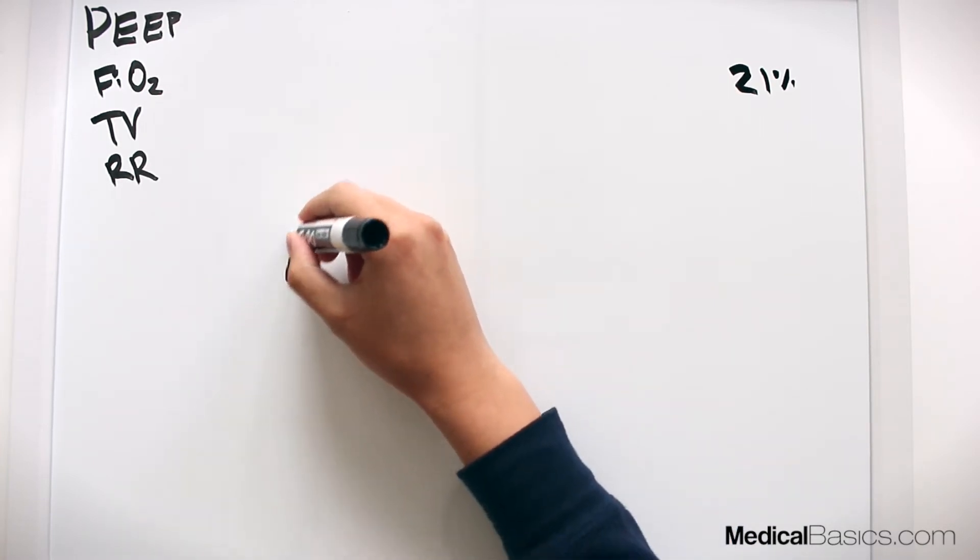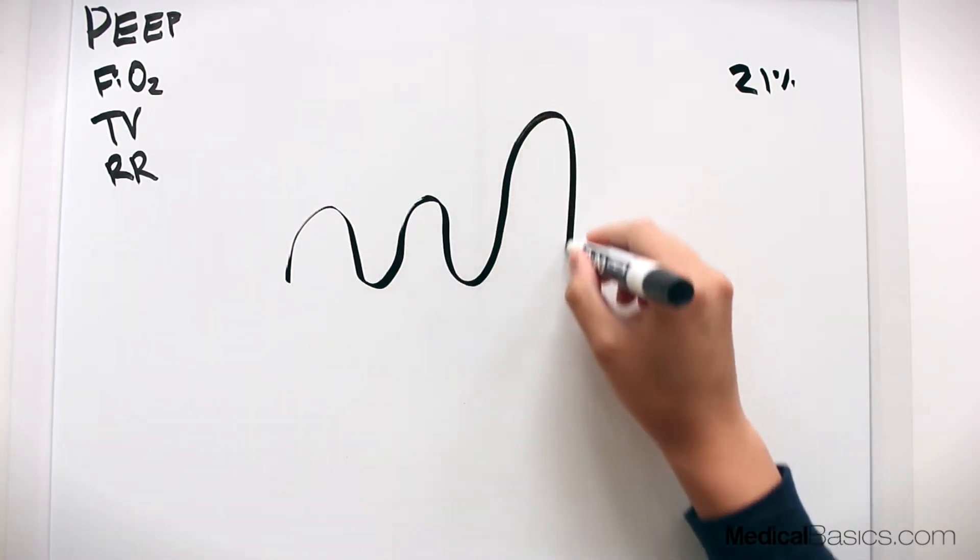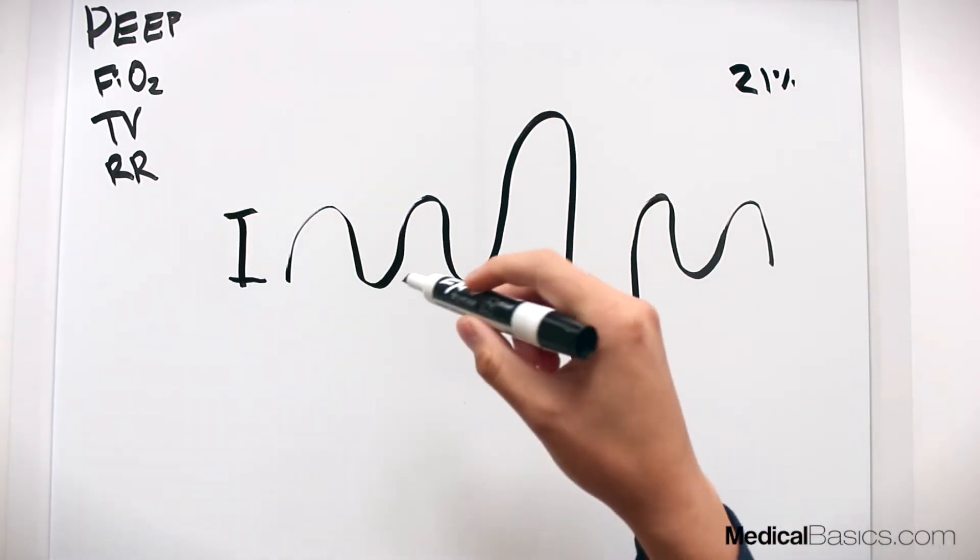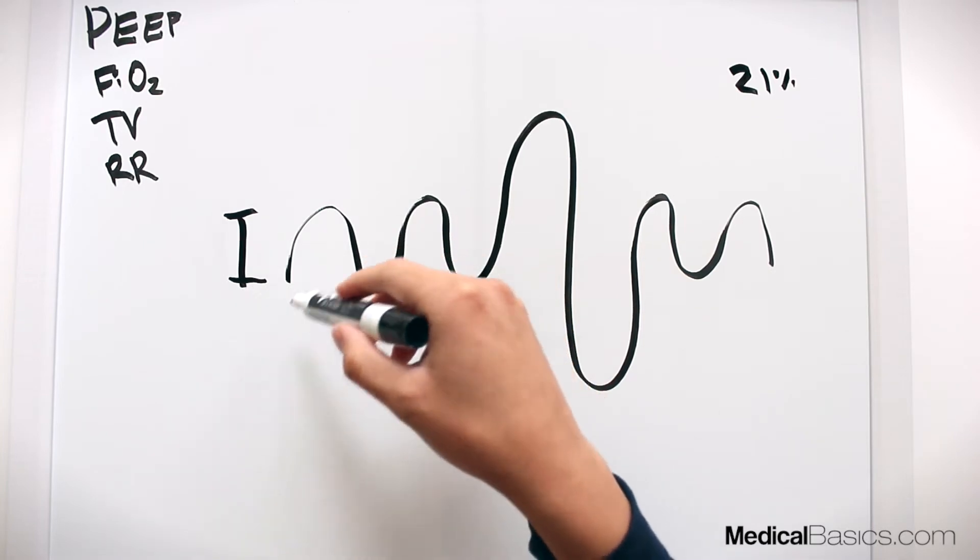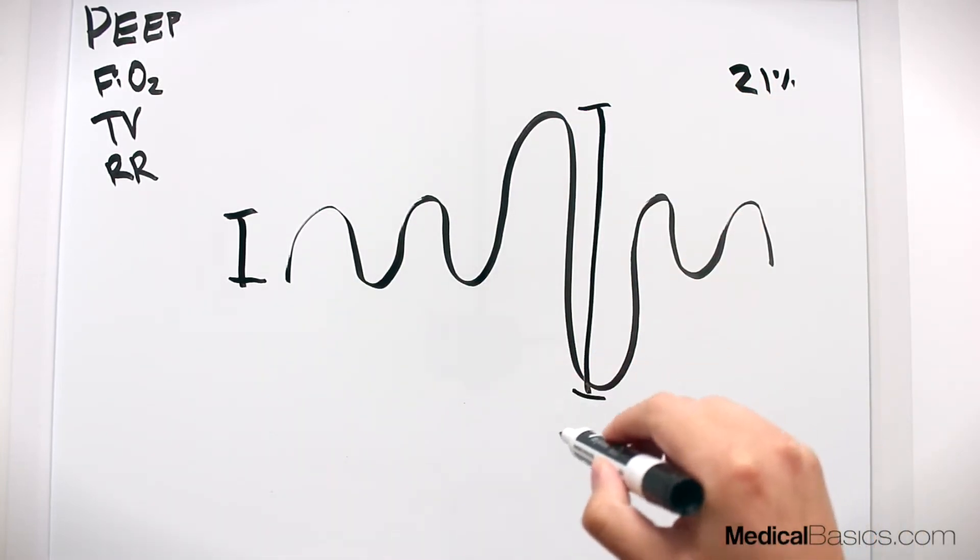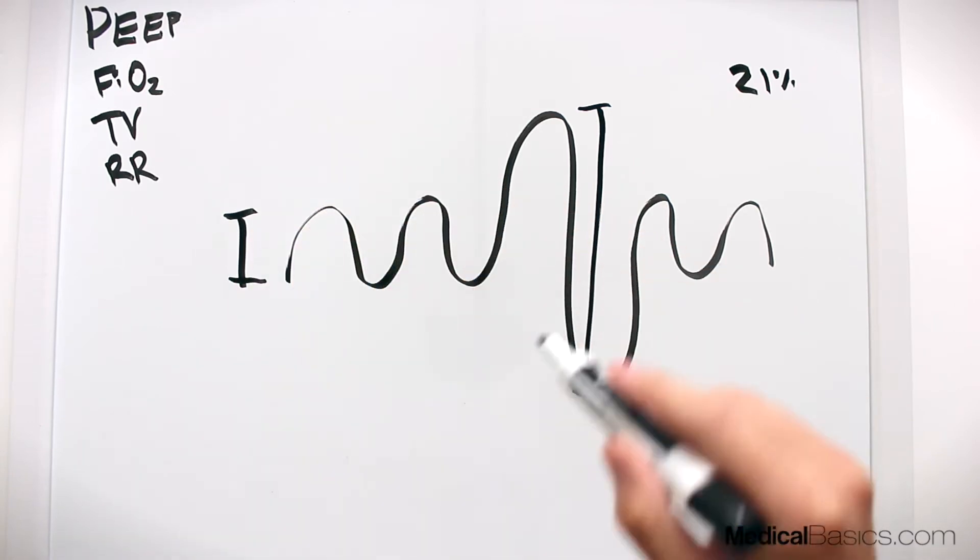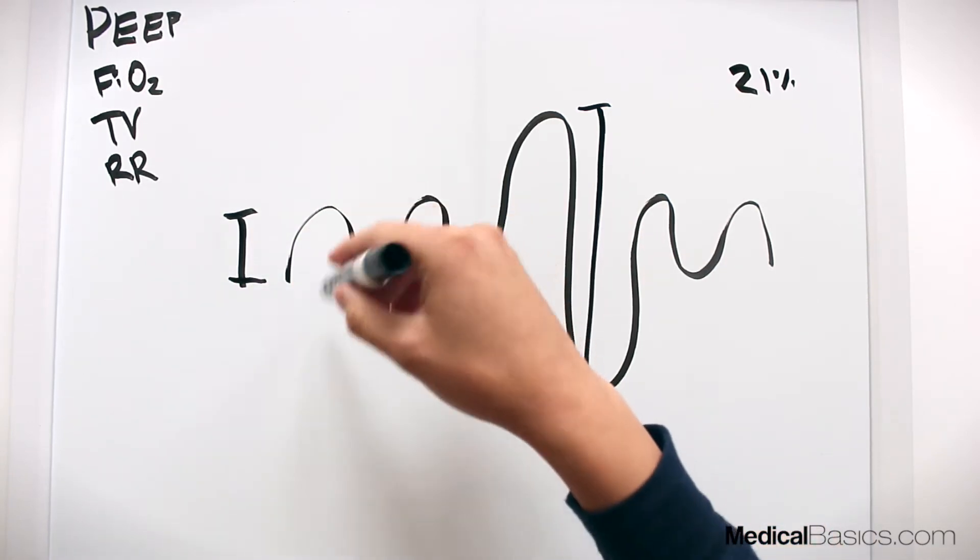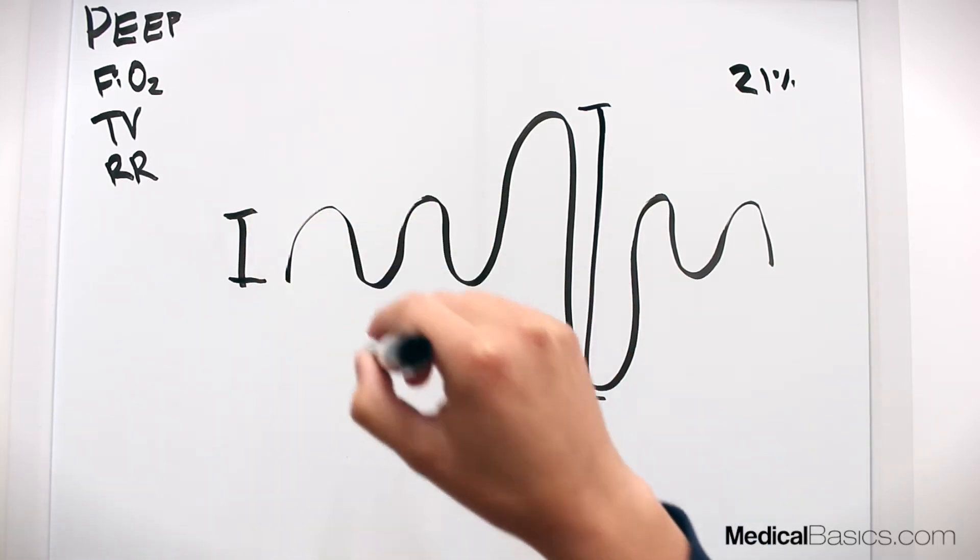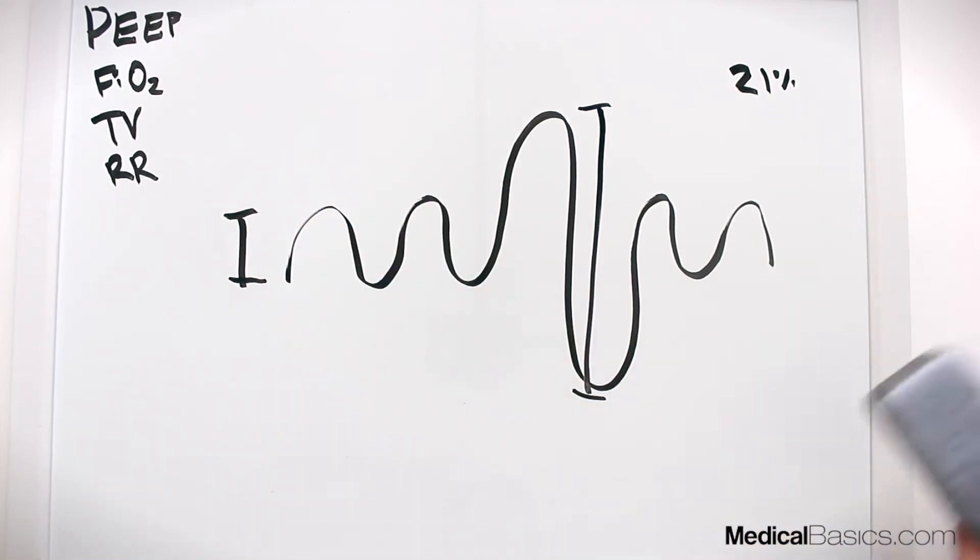Tidal volume, if you remember your flow volume loops, this right here is tidal volume. It's the amount of air that in a normal inspiration and expiration - this is your peak inspiration and your peak expiration - how much volume are you inspiring versus expiring. So it's that height right there. And respiratory rate is respiratory rate.